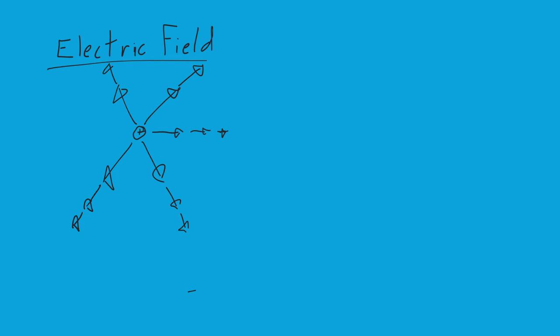Since we're dealing with a positive charge, the arrows are going away. If we were dealing with a negative charge, the arrows would be going in towards it. So it looks something like this. Notice as the arrows get farther out, they get smaller.